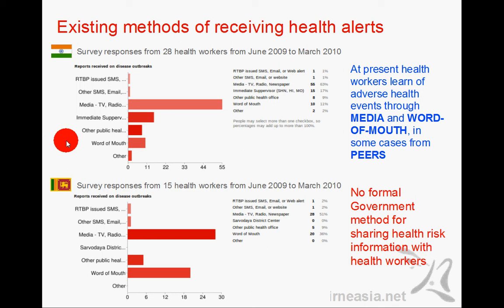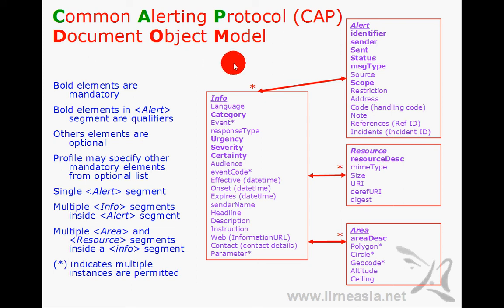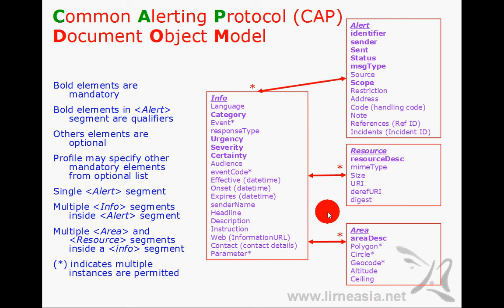Another source is through their peers and word of mouth, and unfortunately governments do not have a formal method for sharing risk information with health workers. We adopted the Common Alerting Protocol, an XML-based global standard recommended by the International Telecommunications Union, incubated by the World Wide Web Consortium, and managed by the OASIS group. The design comprises a header alert segment which can have multiple info segments, and each info segment can have multiple resource and area segments.